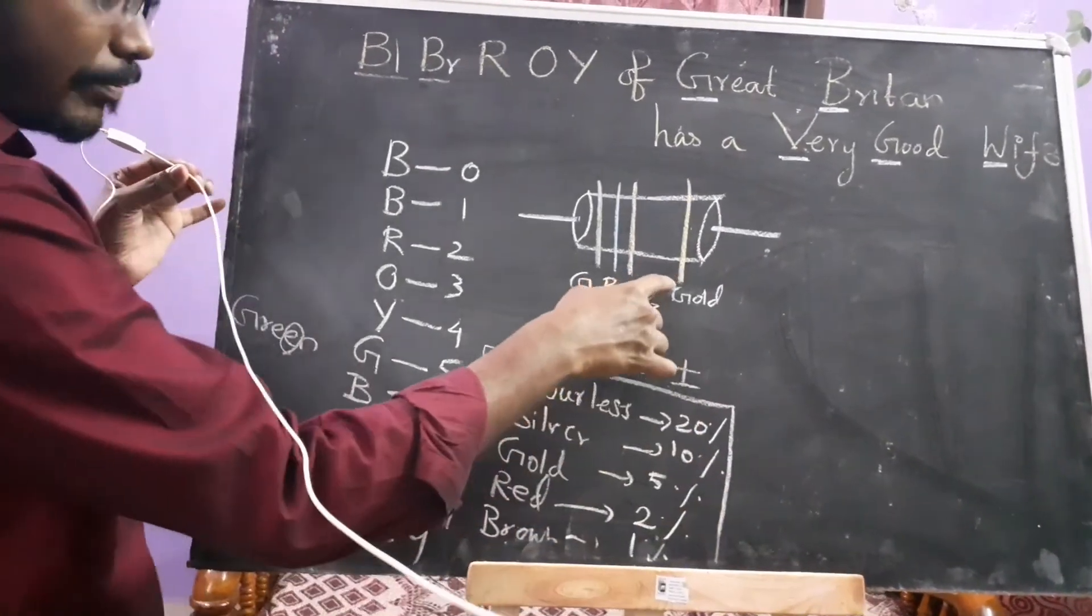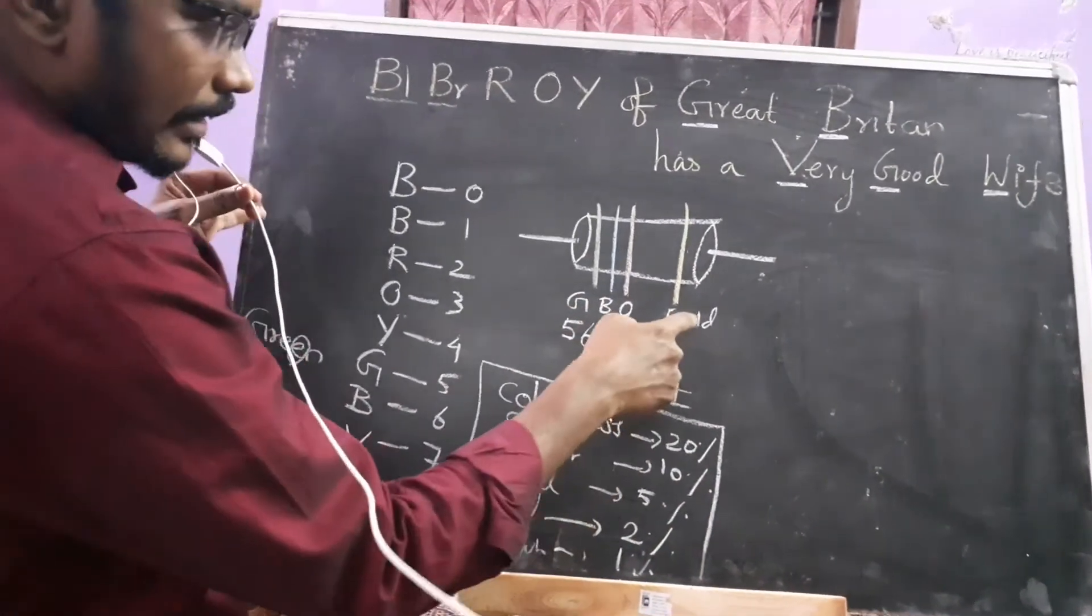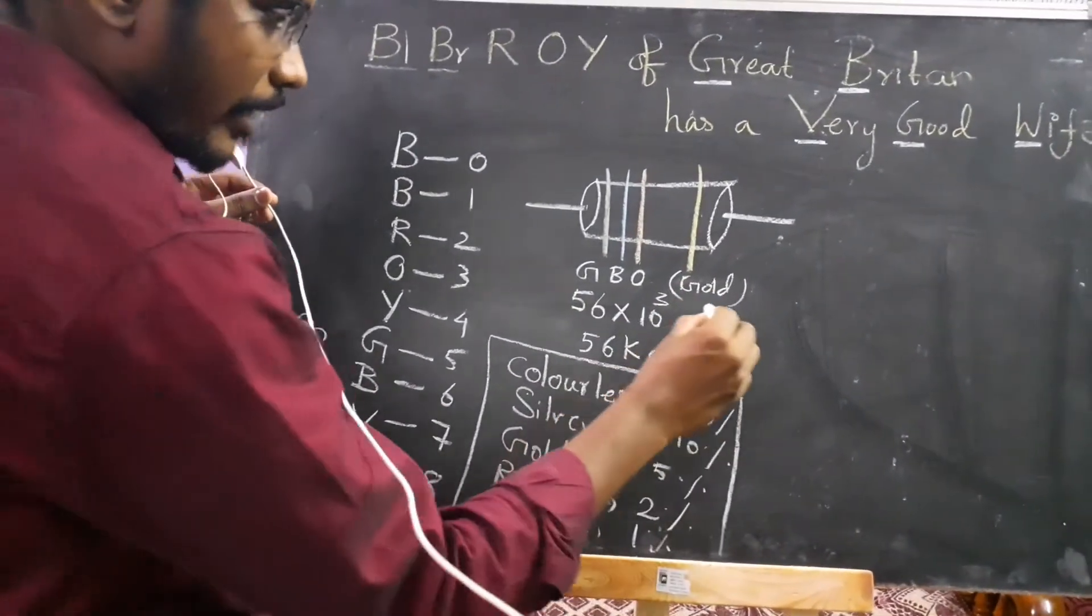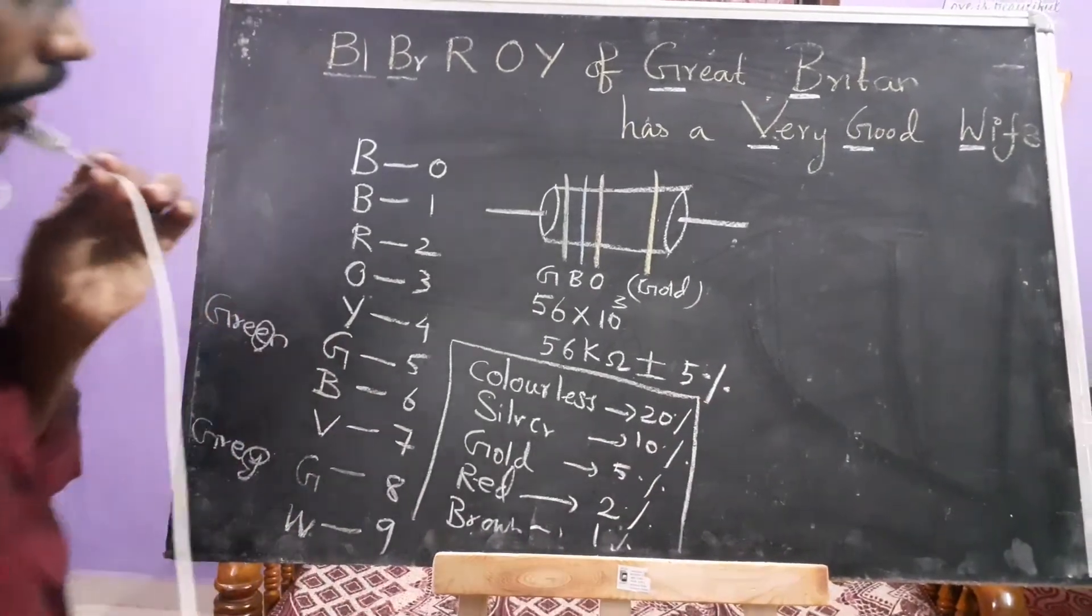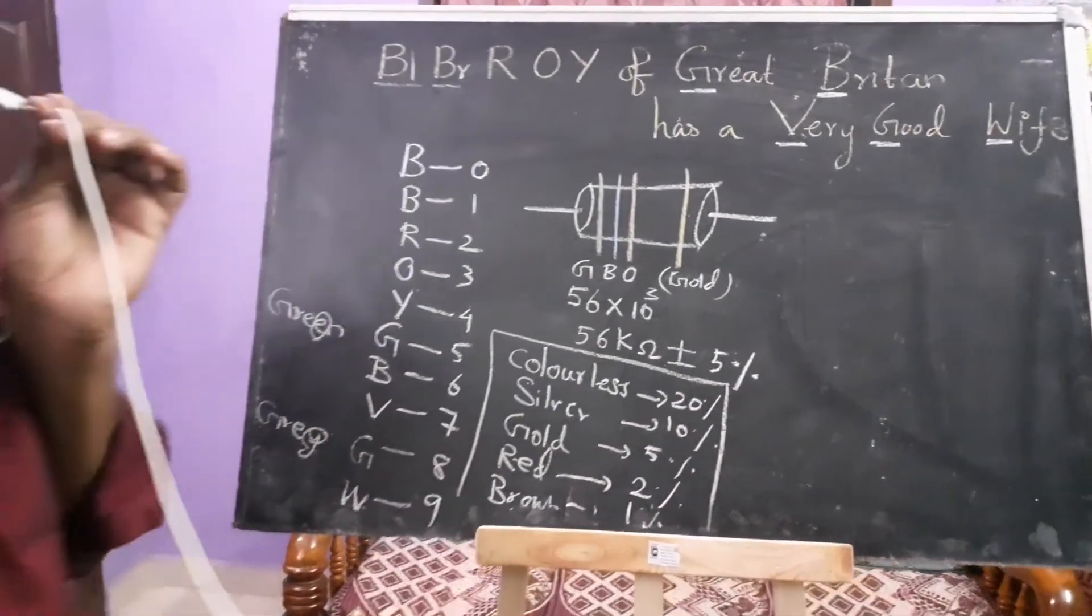If you want to change the tolerance, it will vary. In this case, it is 5%. The answer is 56kΩ plus or minus 5%.